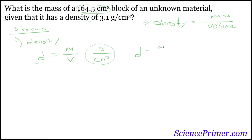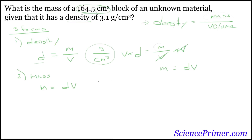Density equals mass divided by volume. If we are asked to find mass, we need to solve this equation for mass. Multiply both sides by volume: volume in the numerator and denominator cancel, and you end up with mass equals density times volume. Checking the units: density is grams per cubic centimeter, and volume is cubic centimeters — cubic centimeters cancel, and we end up with grams, which is what we want for mass.